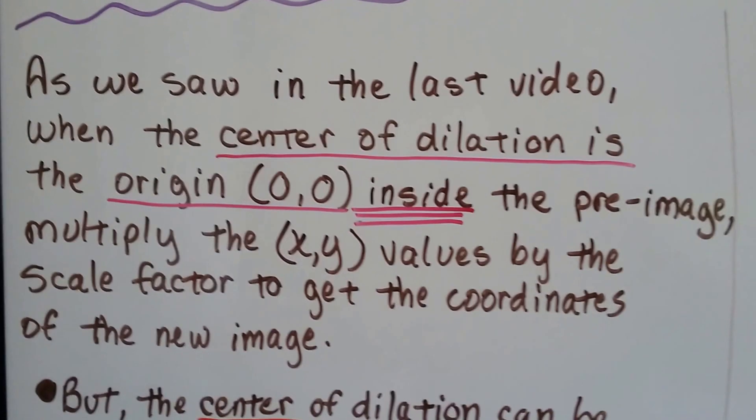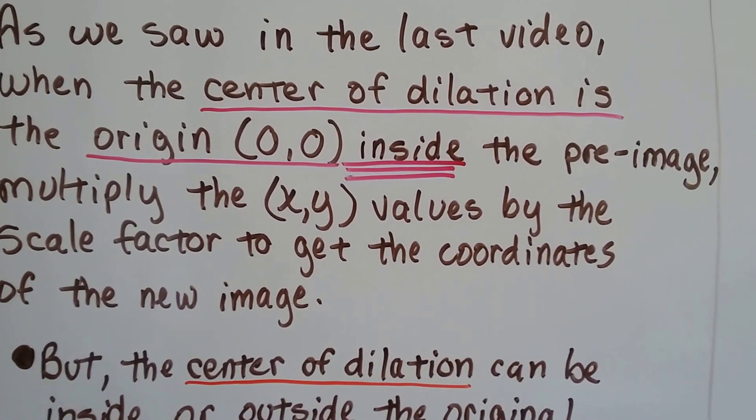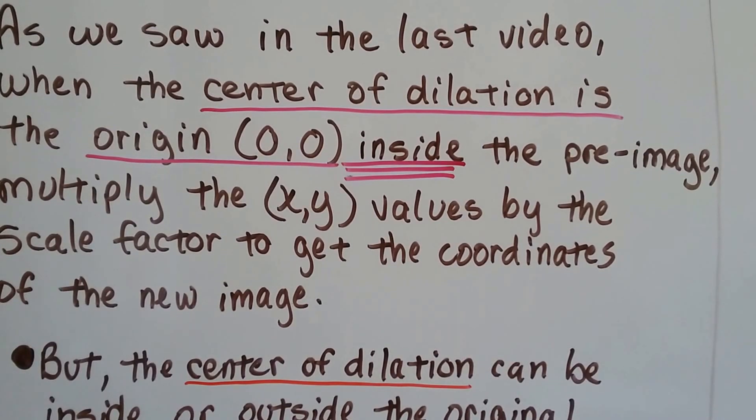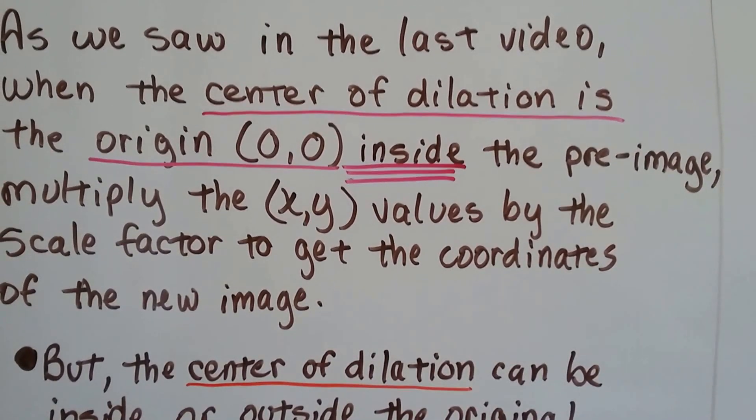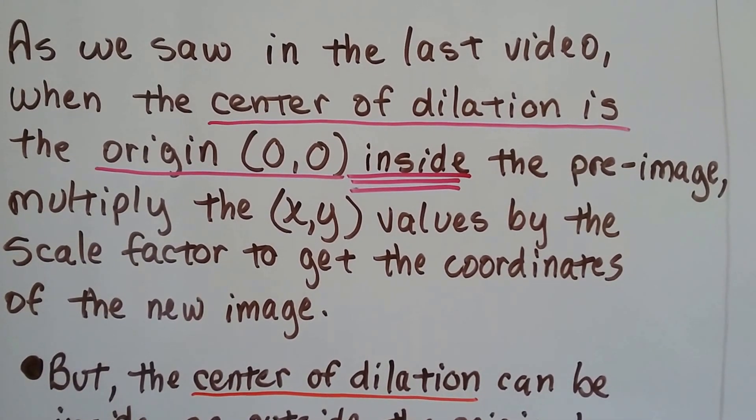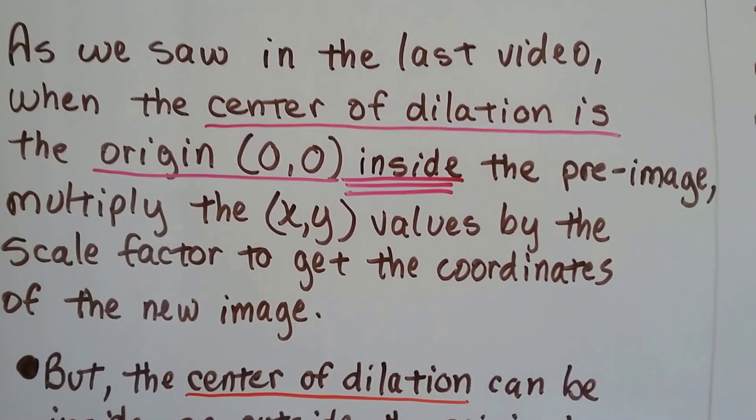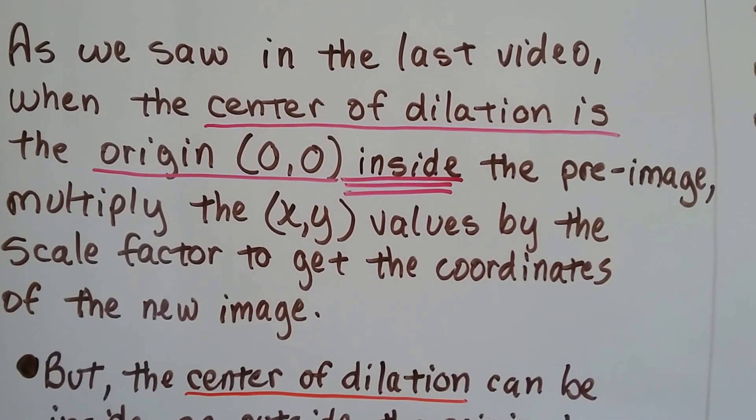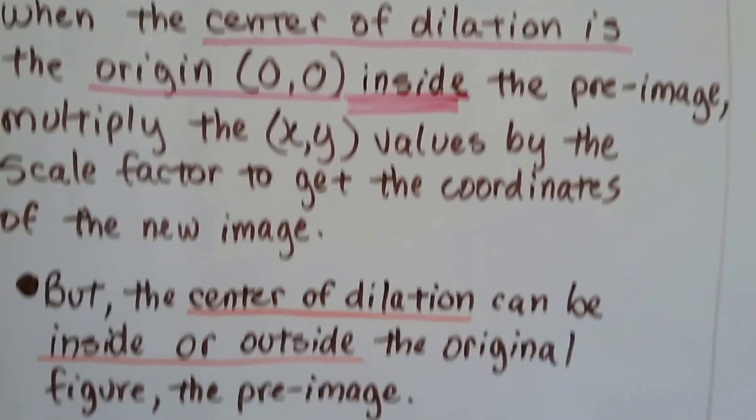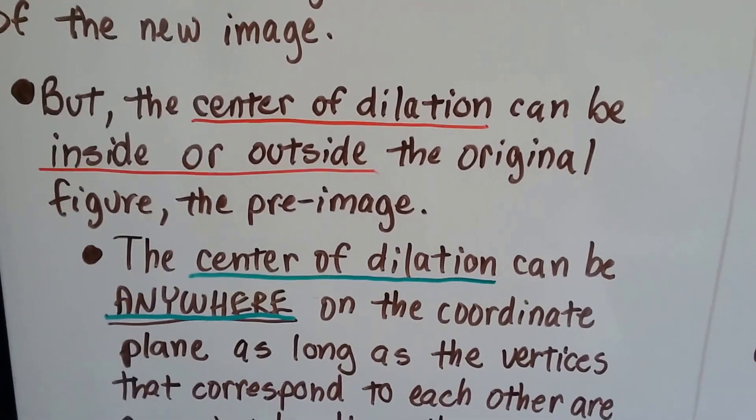As we saw in the last video, when the center of dilation is the origin inside that original pre-image, we multiply the x-y values by the scale factor to get the coordinates of the new image. They give us the scale factor, and the original image is around the origin, like a bullseye. But the center of dilation can be inside or outside that original figure, the pre-image.